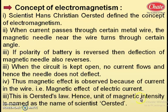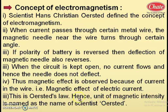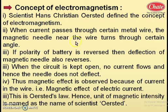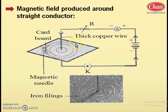The unit of magnetic intensity — also called magnetic field — is named after the scientist Oersted. This magnetic effect of electric current is also termed electromagnetism and is also called Oersted's law, as it was first introduced in science by the famous scientist Christian Oersted. Now let us look at the next concept related to the magnetic field.